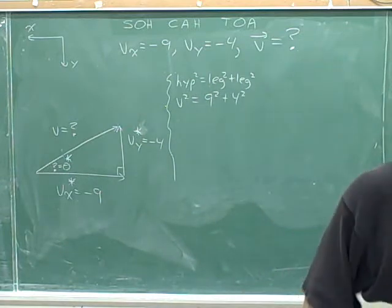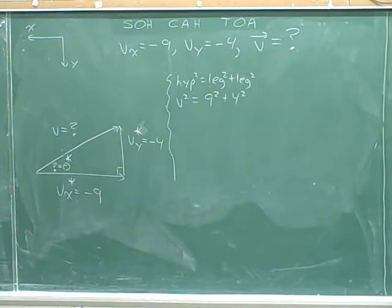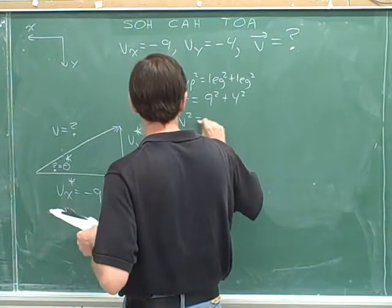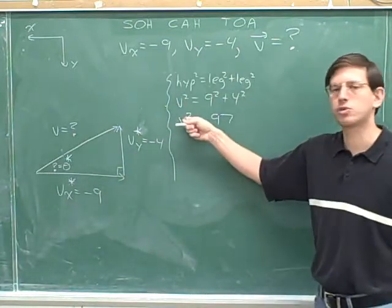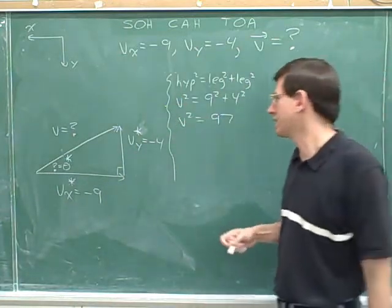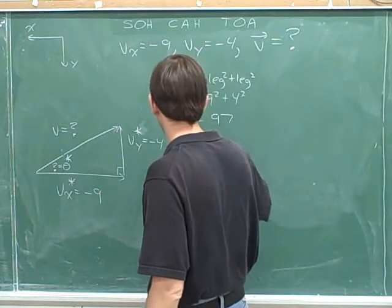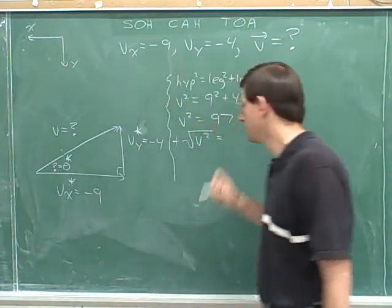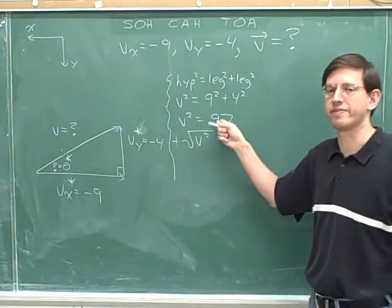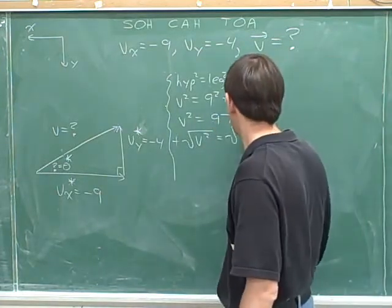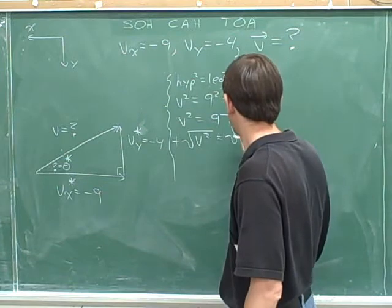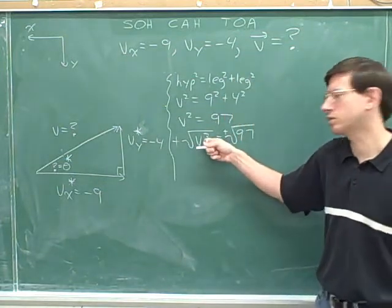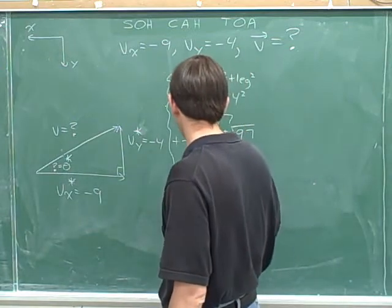9 squared plus 4 squared. What is that? 97. To get rid of this square, we need to do the opposite, which is to take the square root. But if we're going to take the square root of the left, we have to take the square root of the right.